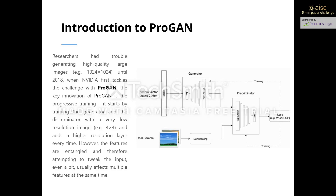In order to improve GAN's image quality, the PROGAN model was introduced later on. PROGAN used the progressive training method, meaning it starts by training the model with a very low resolution image, say 4x4, and increases the resolution over time. Although PROGAN generates high quality images, its ability to control specific features of the generated image is very limited, so attempting to tweak the input even a bit usually affects multiple features at the same time.